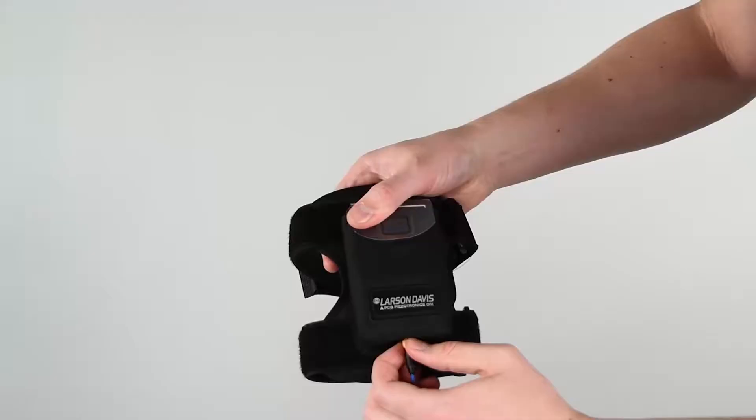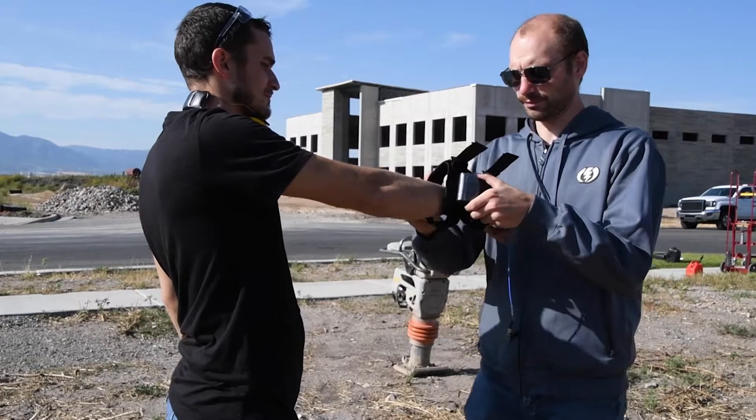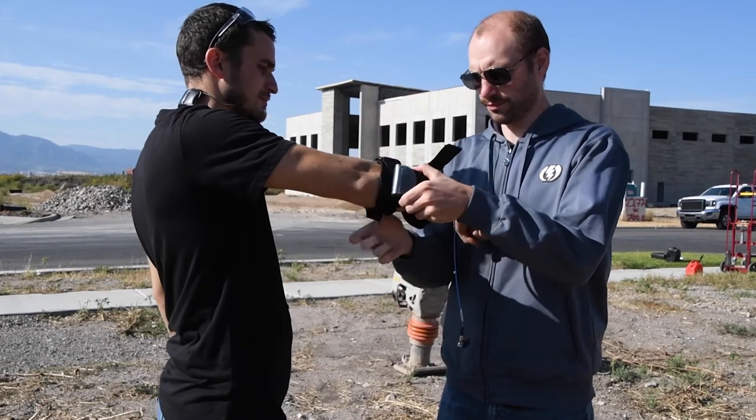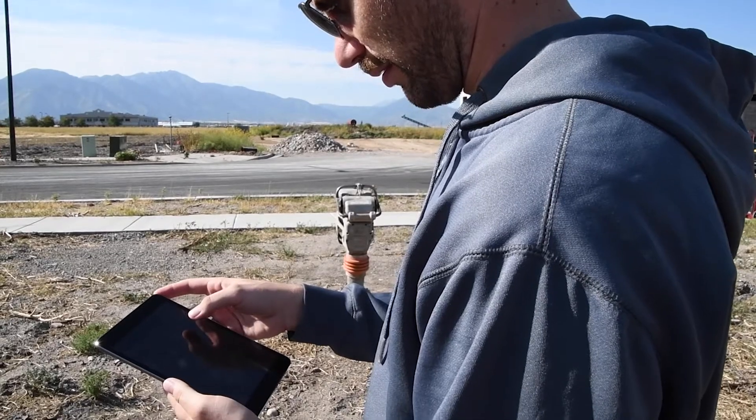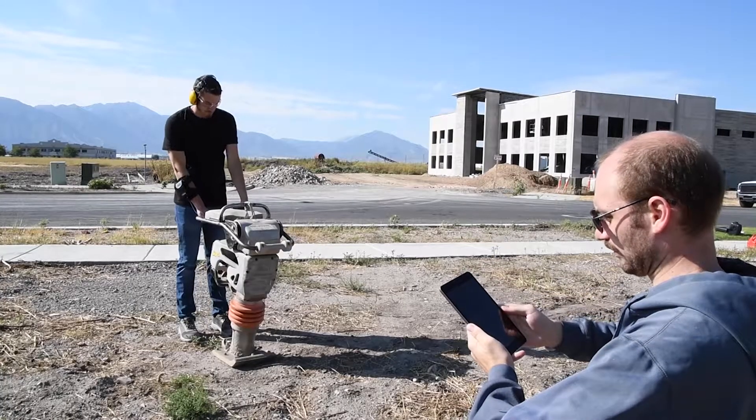Now attach the armband to the person being monitored. You can start the measurement using the power button or connect using the control app. We run the meter for two minutes.